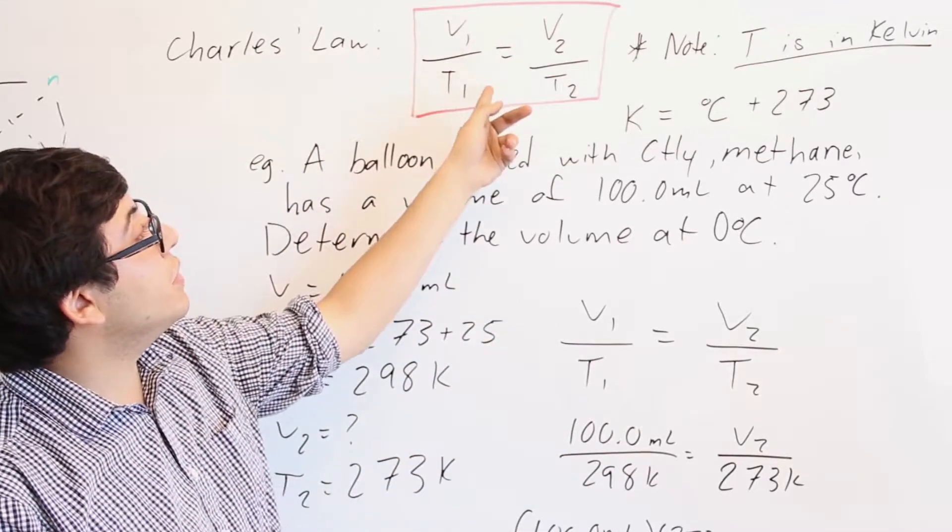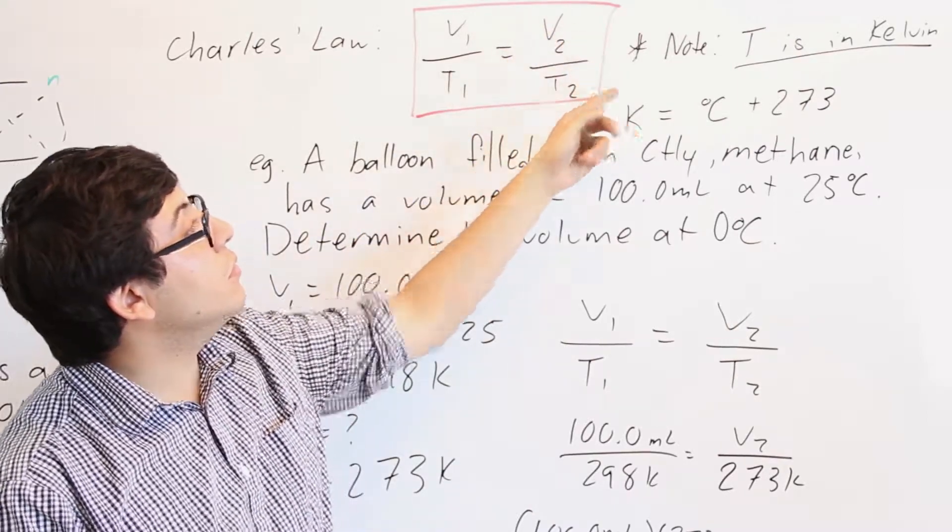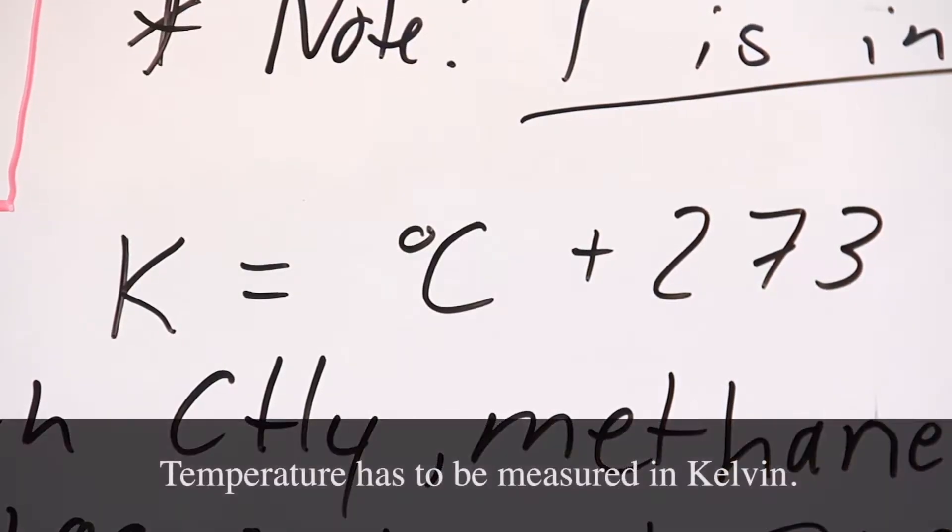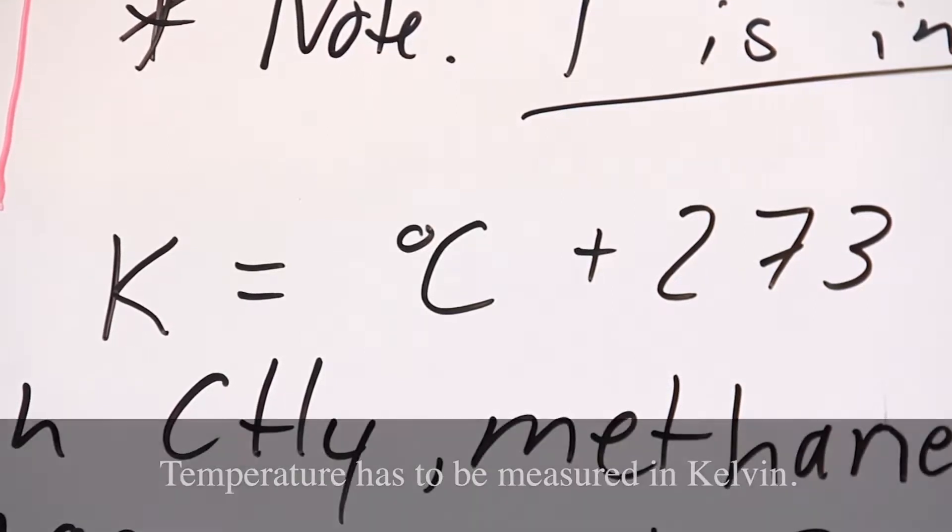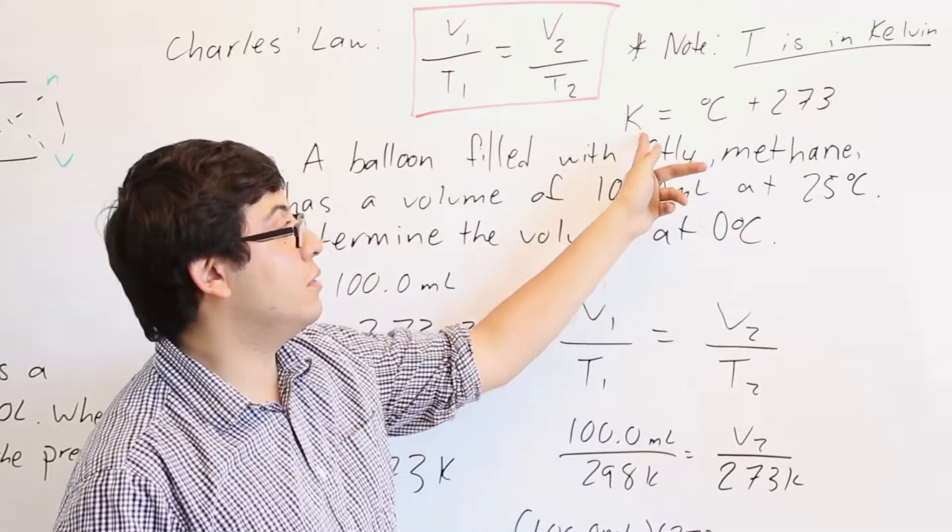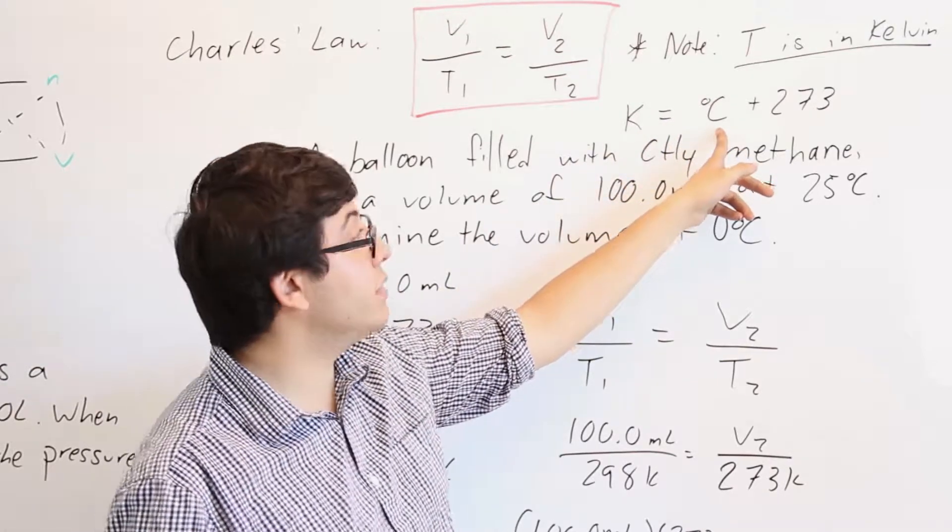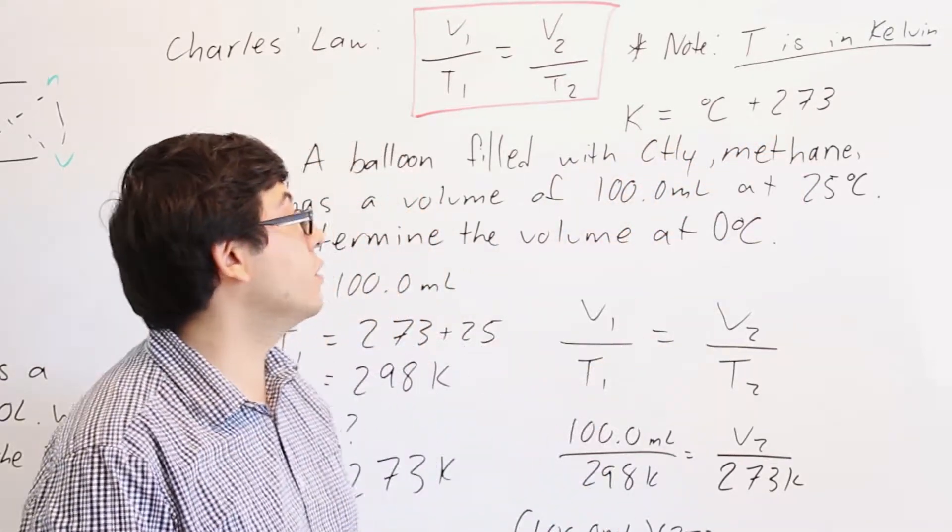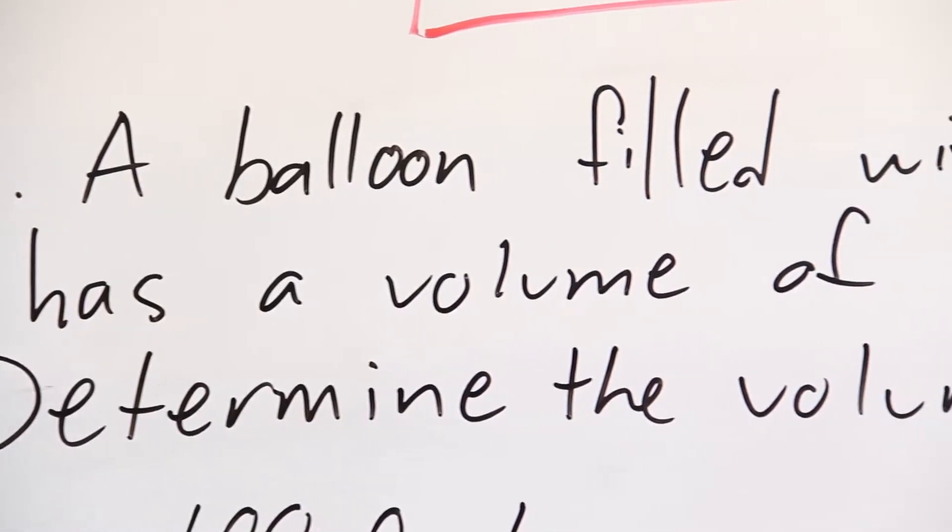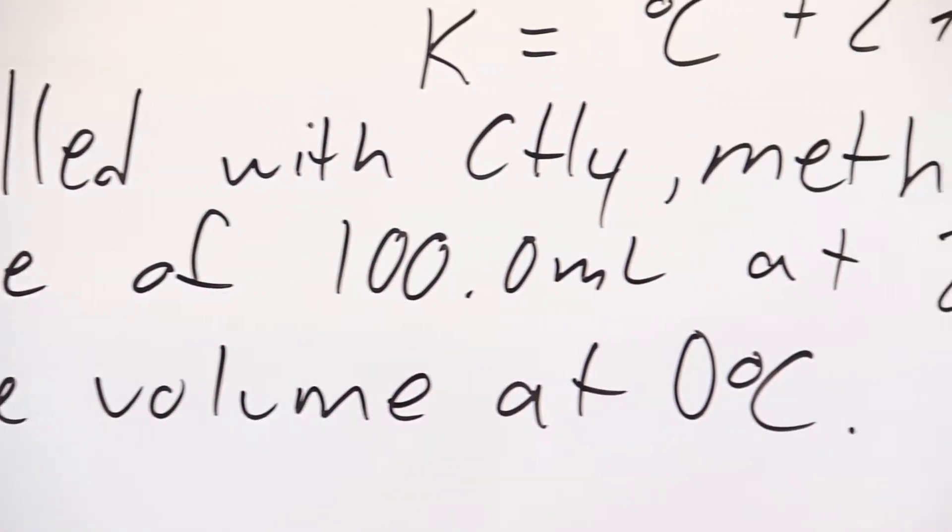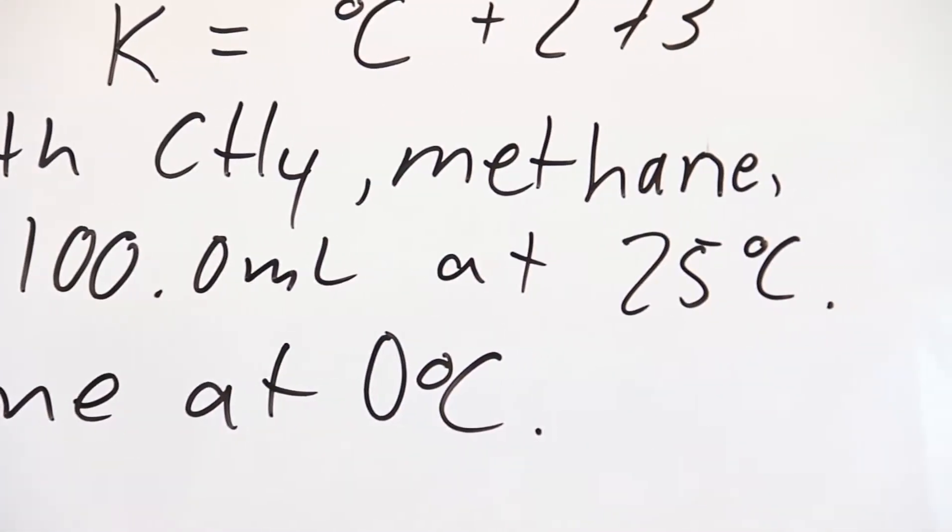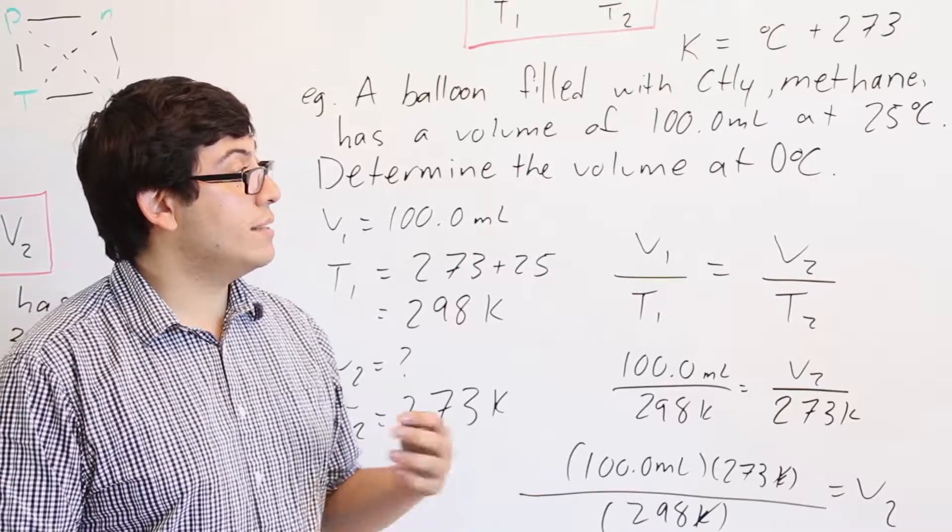So V₁ over T₁ is equal to V₂ over T₂. Note that in this case temperature has to be measured in Kelvin, and you can always convert from degrees Celsius to Kelvin by using this equation right here. So Kelvin is equal to the temperature that you have in degrees Celsius plus 273. So a balloon is filled with methane, CH₄, and it has a volume of 100 milliliters at 25 degrees Celsius. We need to determine the volume of the balloon at 0 degrees Celsius.